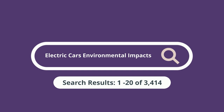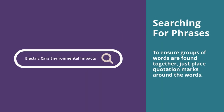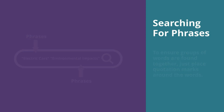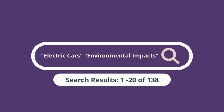To improve the relevance of your results, you may want the database to retrieve results that only contain certain groups of words together. These are called phrases. For example, "electric cars" and "environmental impacts" are both phrases. To ensure groups of words are found together, just place quotation marks around the words. This causes the database to search for articles containing those exact phrases, so you end up with fewer results, but they're more relevant to your search.